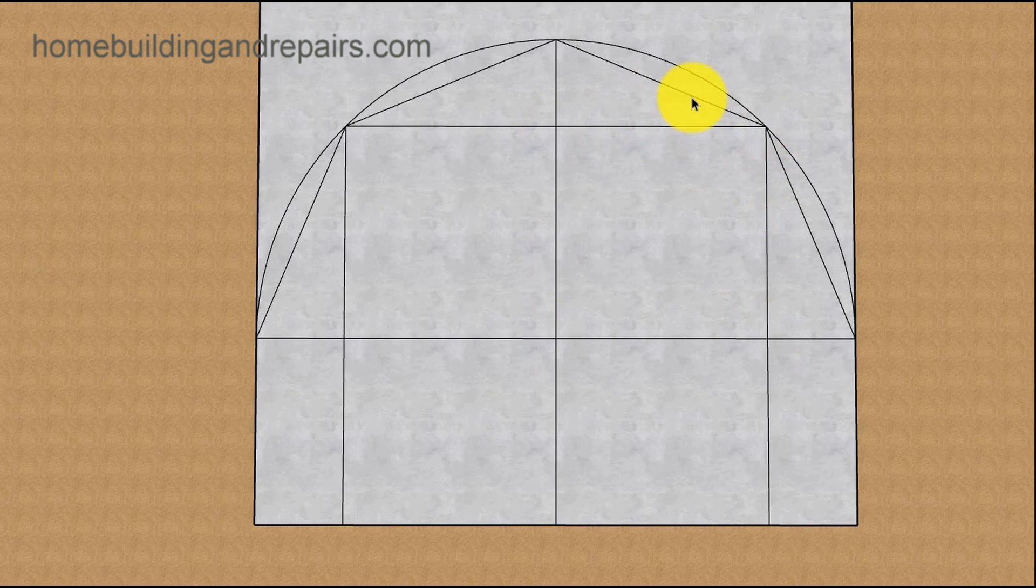Now, if you need help figuring the roof rafter lengths, I will provide you with a link here for the Pythagorean Theorem. And you can always go to the website and check out the construction math section. And that has a lot more detailed information for different formulas you can use to figure out a variety of different things for building.